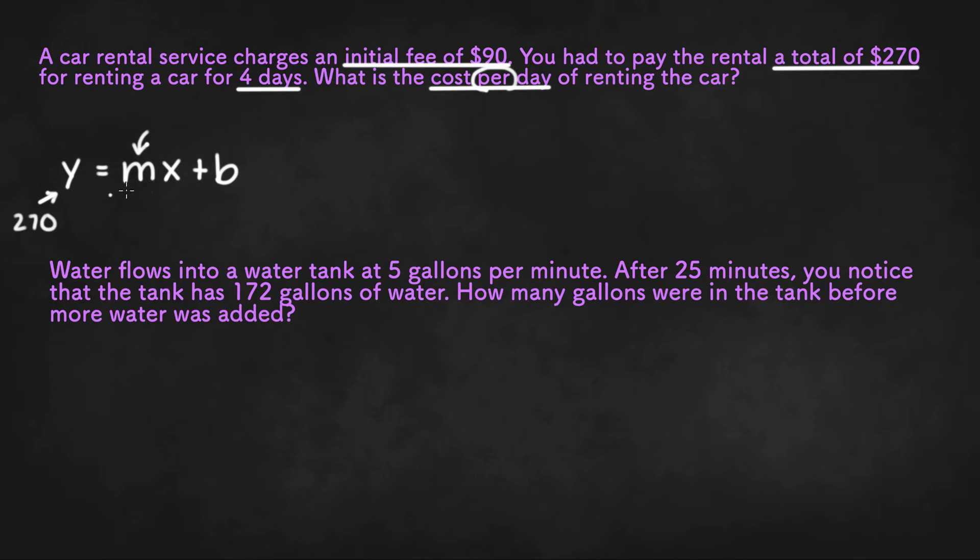Now x is related to m. Since m is the cost per day, x must be the number of days, or four in this case. And b is a fixed value. It could be an initial fee or a fixed rate, and it'll be $90.